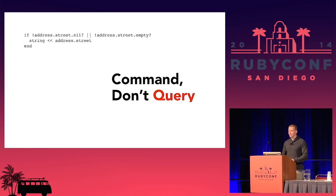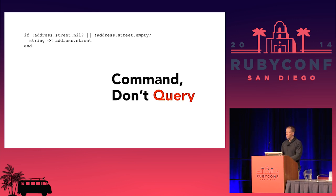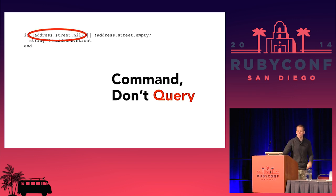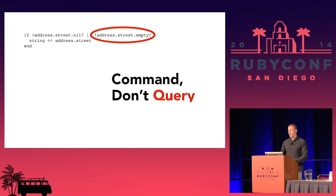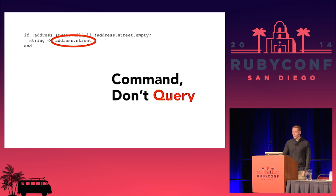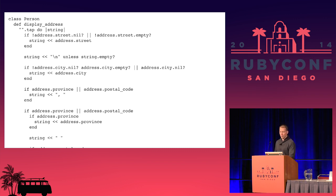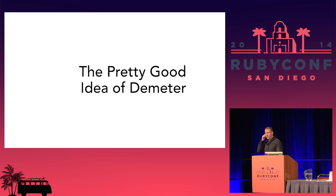Command don't query. We don't want to ask an object for information about itself and do the work — we just want to tell it what to do. But here we've got queries. We're asking the address for its street and checking that value. That's a query too — not a command, even though there's no question mark. Are there any commands here? This code is in Person. We're displaying the address.